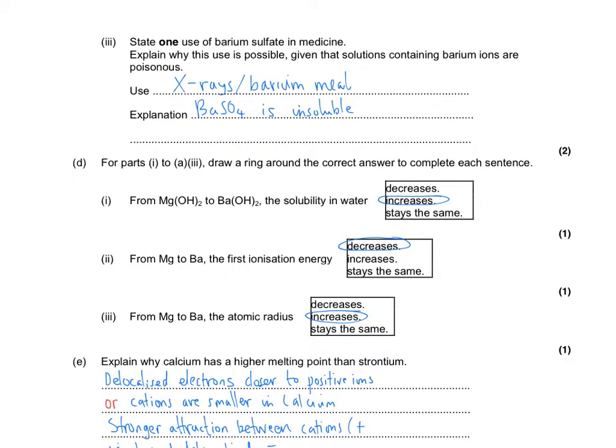So some uses. There are several uses you need to be aware of for group 2. First thing is the barium sulfate used in barium meal x-rays. And explanation, barium sulfate is insoluble. Remember, barium ions are really toxic, but barium sulfate is really insoluble. It doesn't get into the bloodstream, so it can't poison anybody.